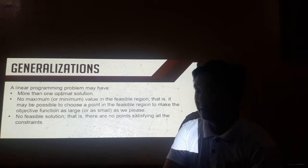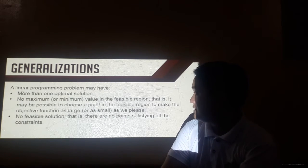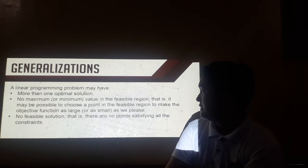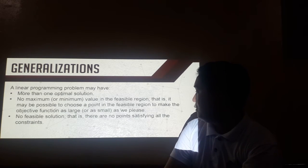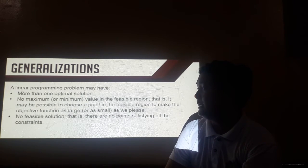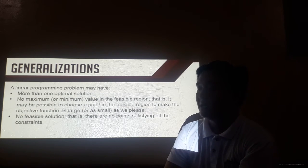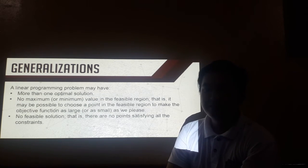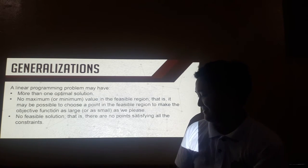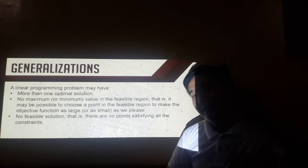We can also generalize that a linear programming problem can have one or more than one optimal solution. It can also have no maximum or minimum value if it's unbounded, but we can use the extreme points from the graph to give a possible solution. Also, if there is no feasible solution — that is, there are no points satisfying all the constraints — there is no solution. That will be all, and have a great day!